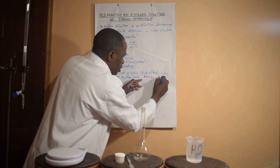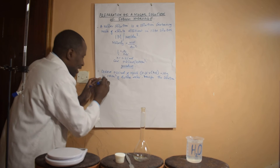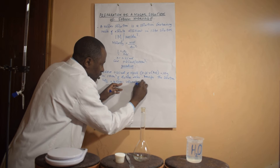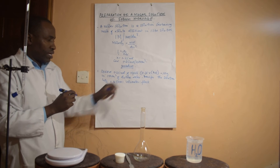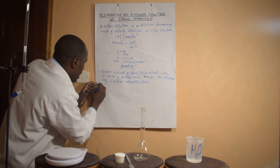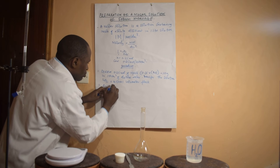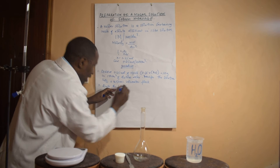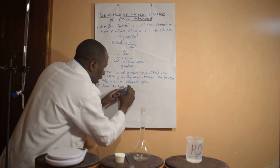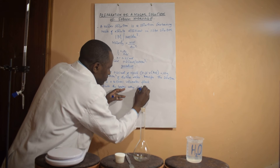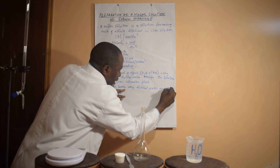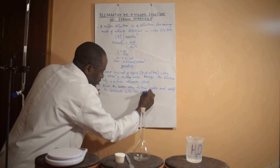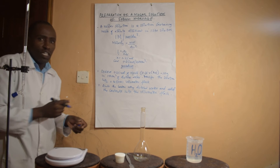Transfer the solution into a 250 mL volumetric flask. Then rinse the beaker — assuming you dissolved the sodium hydroxide in the beaker — rinse it using distilled water and add the contents into the volumetric flask.